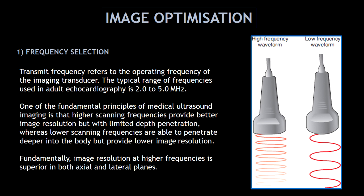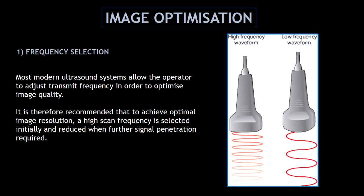The first feature we can adjust to optimize the image is changing the frequency of the transducer. The transmit frequency refers to the operating frequency of the imaging transducer. If you increase the frequency, you will get a better image resolution, but with limited depth penetration. Lower scanning frequencies are able to penetrate deeper into the body, but provide lower image resolution. Image resolution at higher frequencies is superior in both axial and lateral planes. It's recommended to select a high scan frequency initially and reduce it when further signal penetration is required.